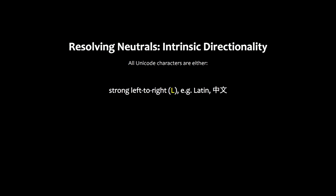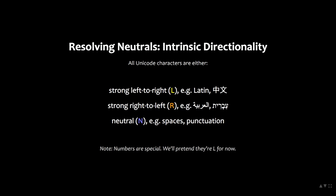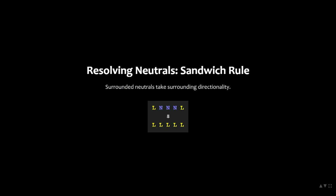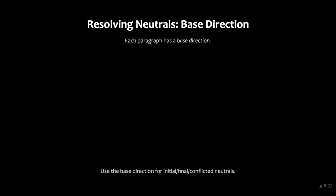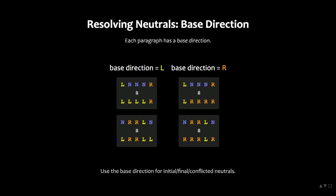Neutrals are characters like punctuation. All characters in Unicode have some intrinsic directionality: there are strong left-to-right characters like Latin and Chinese, strong right-to-left characters like Arabic and Hebrew, and then neutral characters — spaces, punctuation, symbols, emoji. First, we have to figure out what all the neutrals are. We use the sandwich rule: if you're between two strong characters that match, you are that kind of character. But sometimes that doesn't work — maybe you're between two different kinds of characters, or at the start or end of a paragraph. To deal with that case, we use the base direction of the paragraph. The paragraph has an inherent overarching directionality, and that's how we resolve neutrals to either left-to-right or right-to-left.